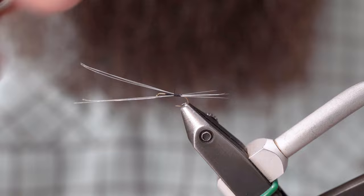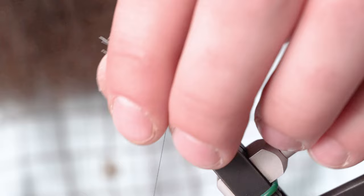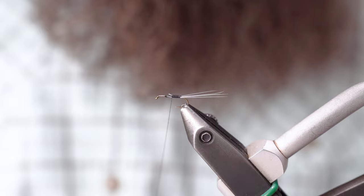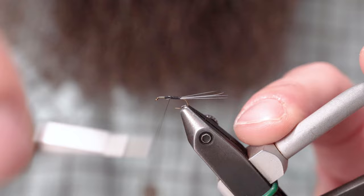Again, going forward real nice tight touching wraps here. And I'm wrapping those forward before I trim them just to keep that body nice and even.